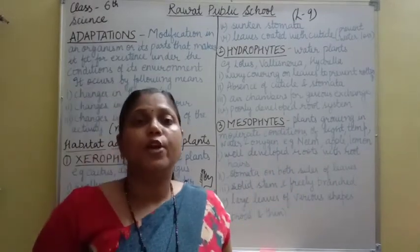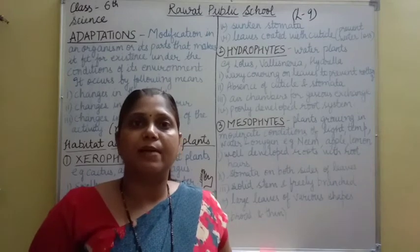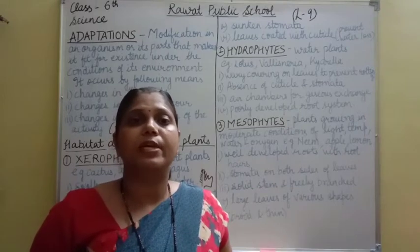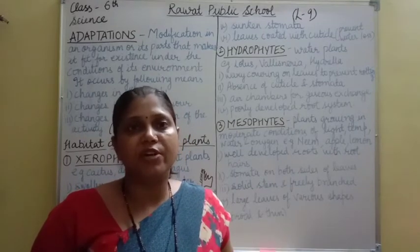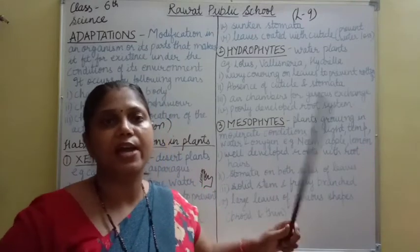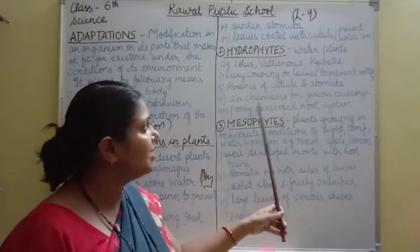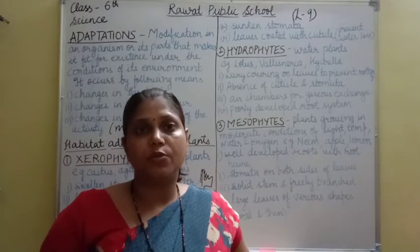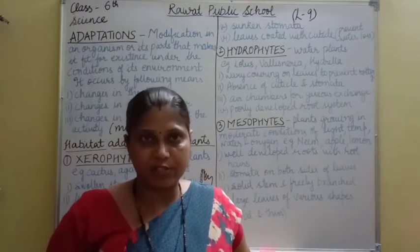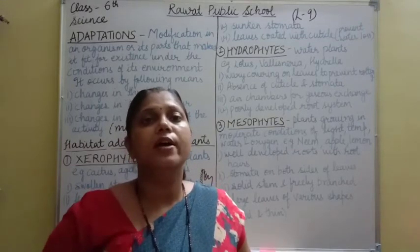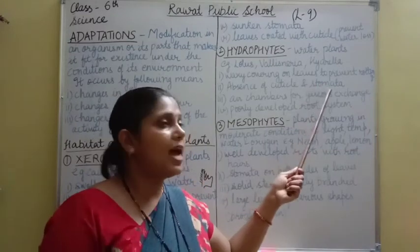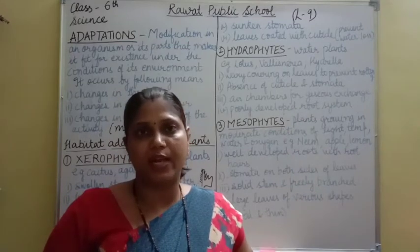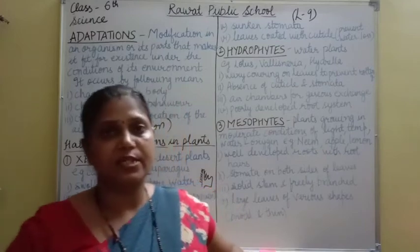Second, absence of cuticle and stomata. Since the plant itself is in water, cuticle and stomata have no function and can be absent. Third, air chambers for gaseous exchange. Normally stomata perform gaseous exchange — absorbing carbon dioxide and releasing oxygen. But because stomata are absent in hydrophytes, air chambers are present in hydrophytic plants to help in gaseous exchange.